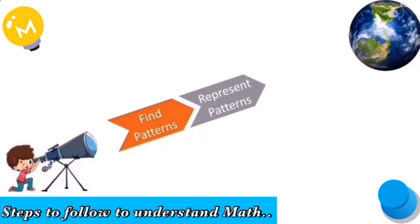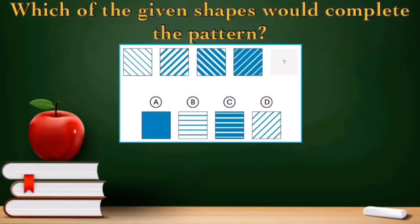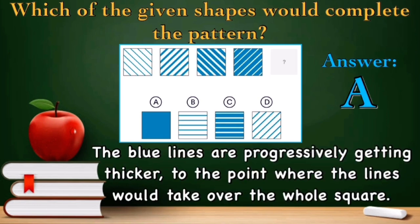First, find pattern. Second, represent patterns in the form of symbols, notations, and shapes or numbers. And finally, interpret the pattern. Now let us have this example and use the steps to answer the following: which of the given shapes would complete the pattern? What do you think? It's letter A. The blue lines are progressively getting thicker to the point where the lines would take over the whole square.